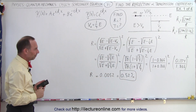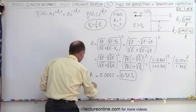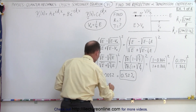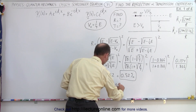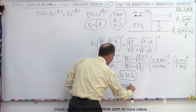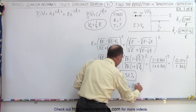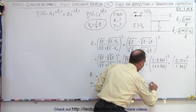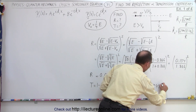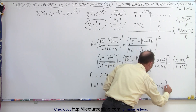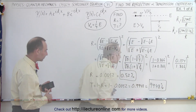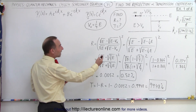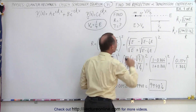It's kind of a small number. What we can do now is say the transmission coefficient is equal to one minus the reflection coefficient, so this would be one minus 0.0052, which equals 0.9948, or 99.48 percent of the particles will be transmitted.